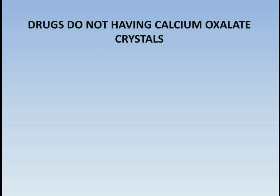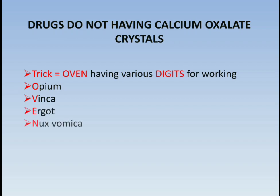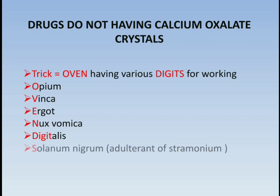Next are drugs which do not have calcium oxalate crystals. The trick is 'O1 having various digits for working.' O denotes opium, V represents vinca, E denotes ergot, N denotes nux vomica, digits denotes digitalis, and S denotes Solanum nigrum — which is an adulterant of stramonium.